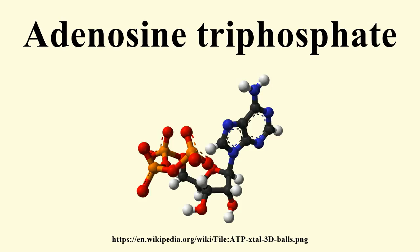Anaerobic respiration is the process of respiration using an electron acceptor other than O₂. In prokaryotes, multiple electron acceptors can be used in anaerobic respiration, including nitrate, sulfate, or carbon dioxide. These processes lead to the ecologically important processes of denitrification, sulfate reduction, and acetogenesis, respectively.